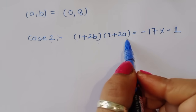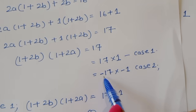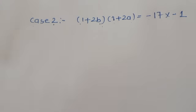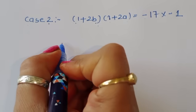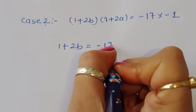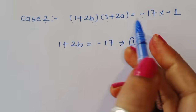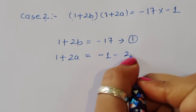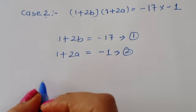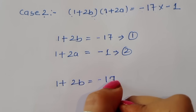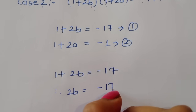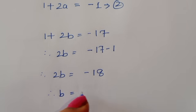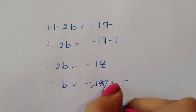Case 2: (1 + 2b)(1 + 2a) = (−17)(−1). Comparing LHS and RHS, equation 1 gives 1 + 2b = −17, so 2b = −18, therefore b = −9.